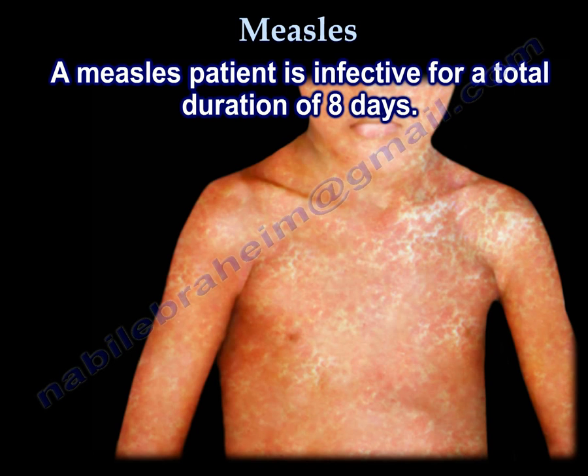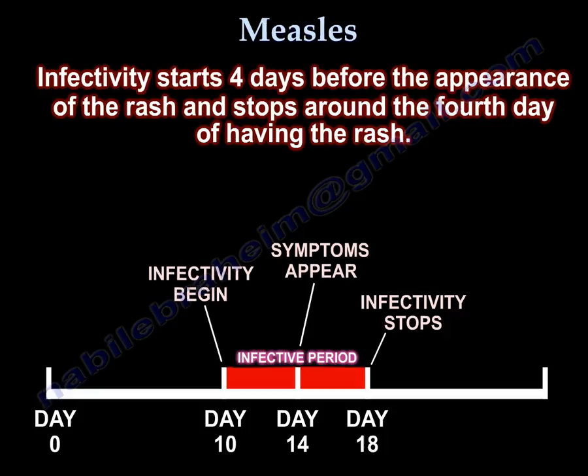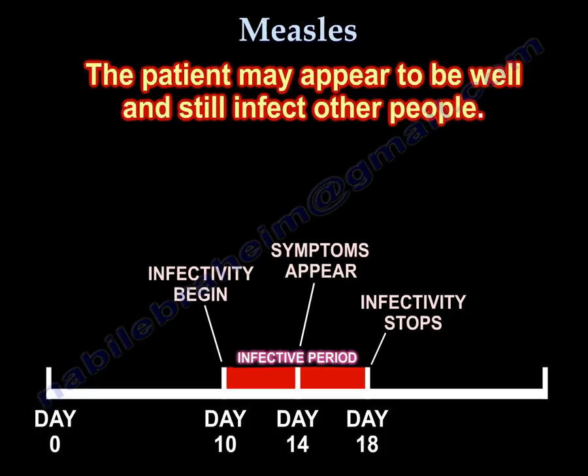A measles patient is infectious for a total duration of 8 days. Infectivity starts four days before the appearance of the rash and stops around the fourth day of having the rash. Thus the patient may appear to be well and still infect other people.